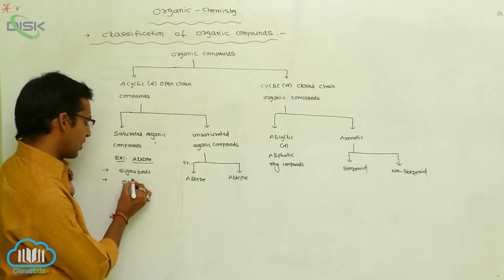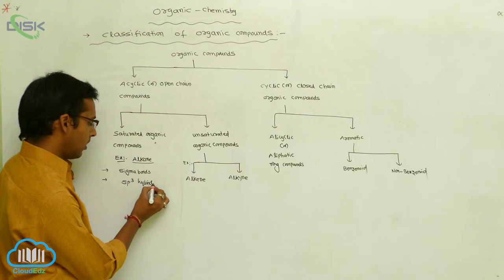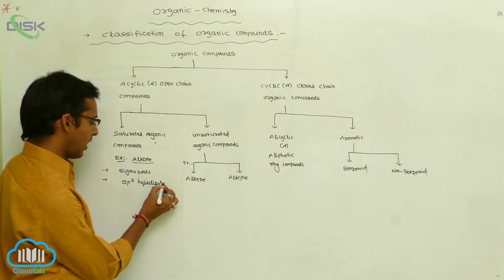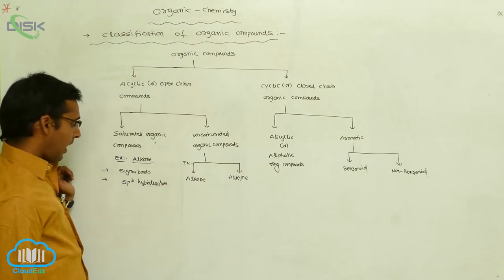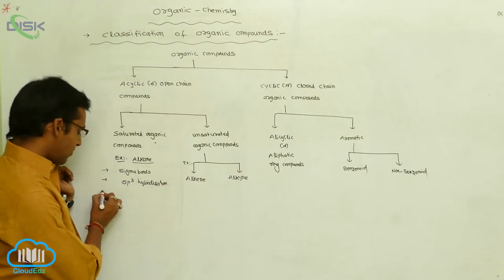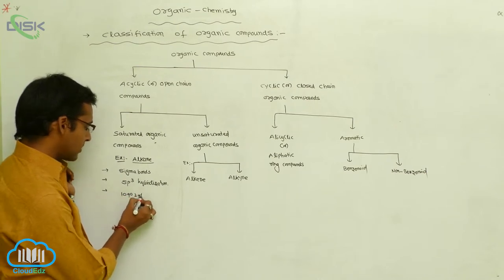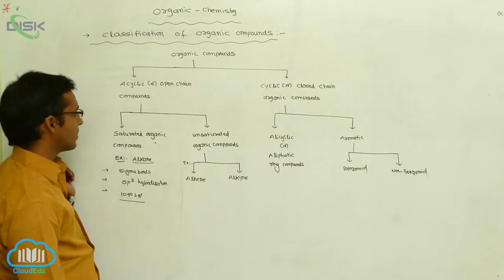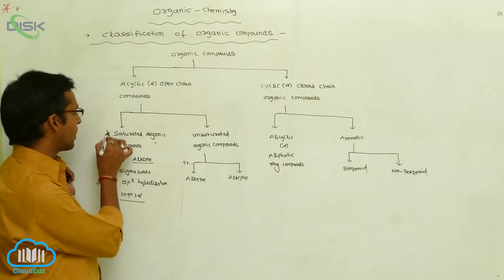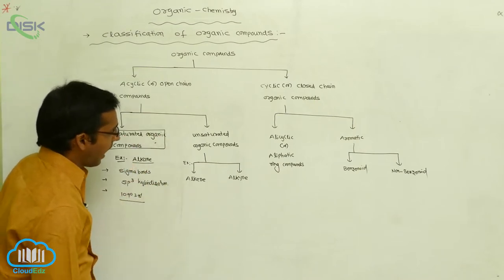Saturated organic compounds, especially alkanes, undergo sp3 hybridization, and the bond angle is 109 degrees 28 minutes.